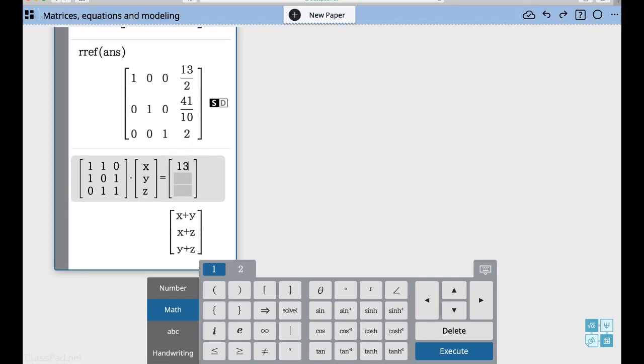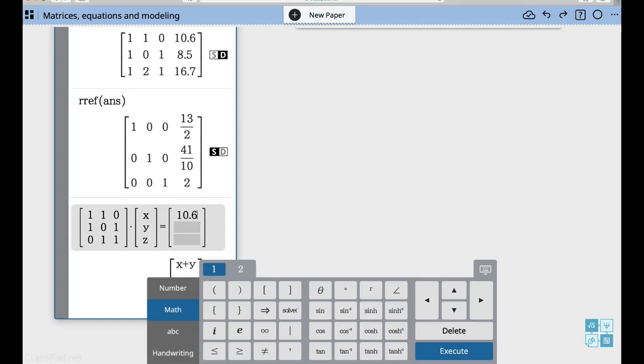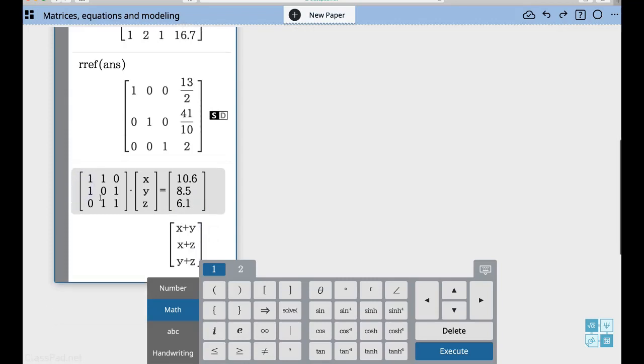So 13 over 2, and that's not the original answer. So let me go back up here. 10.6, 8.5, and 6.1. I could solve this equation by just typing in the word solve and then solving for X and then Y and then Z. What I really want to do is think about how I can solve this system of equations or this matrix as if it were a single equation. Matrix A times X equals matrix B.